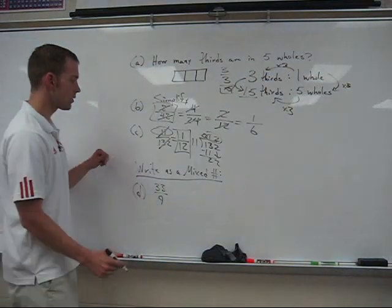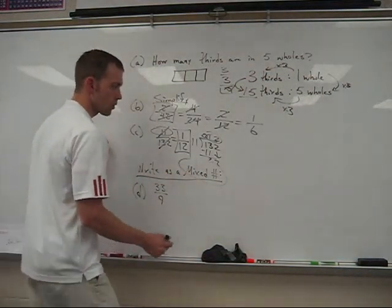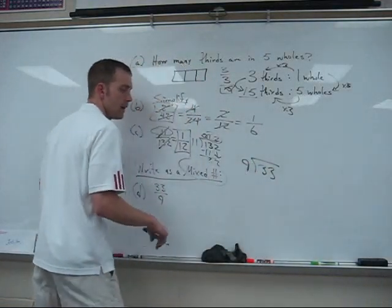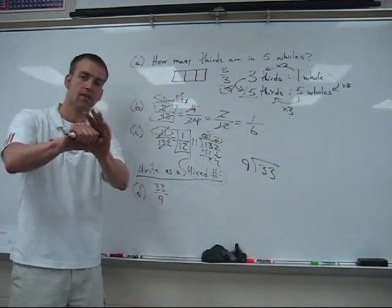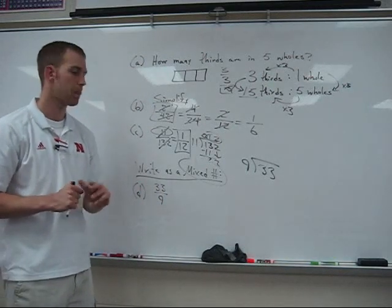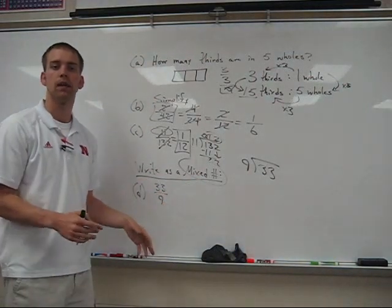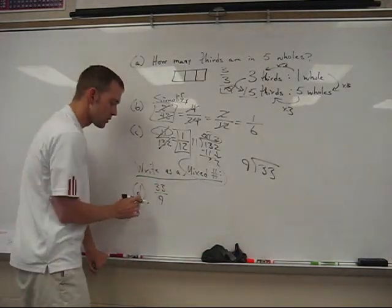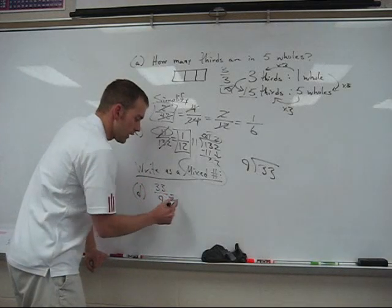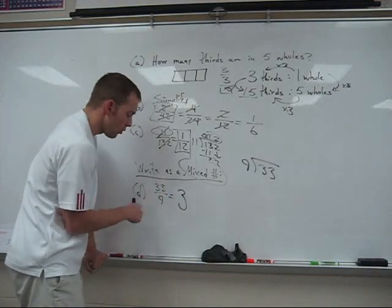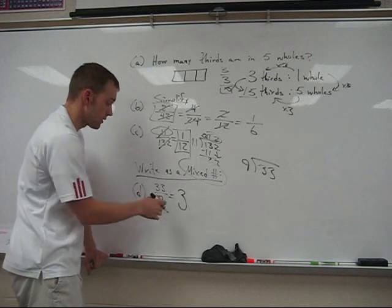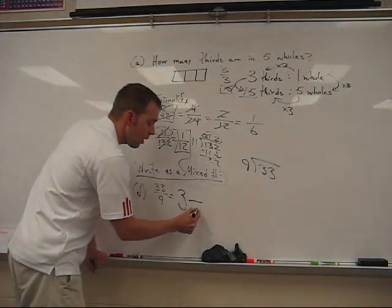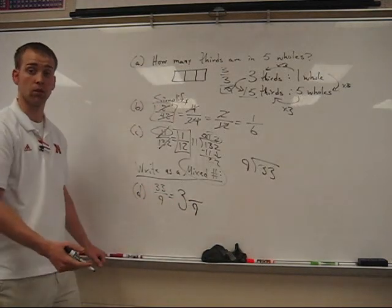You notice they asked us to write it as a mixed number. Several of you are going to have the sudden urge to divide 33 by 9, and you're going to get a decimal. They've asked you for a mixed number. Finding mixed numbers is a lot easier. Nine goes into 33 a total of three whole times, so we're going to call this the whole part. Nine went into 33 three whole times, and I want to know how many of those nines are left over.